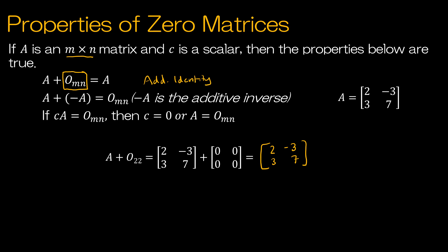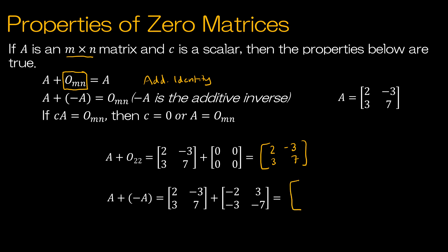The second property uses the additive inverse. If you take A and add negative A — the inverse of each value — you're going to end up with the zero matrix. So 2 plus negative 2 is 0, negative 3 plus 3 is 0, 3 plus negative 3 is 0, 7 plus negative 7 is 0.